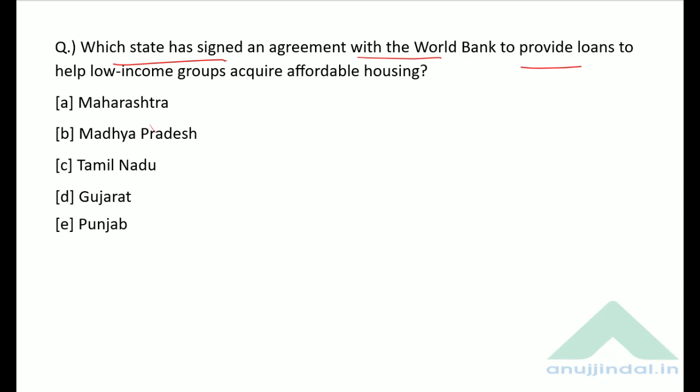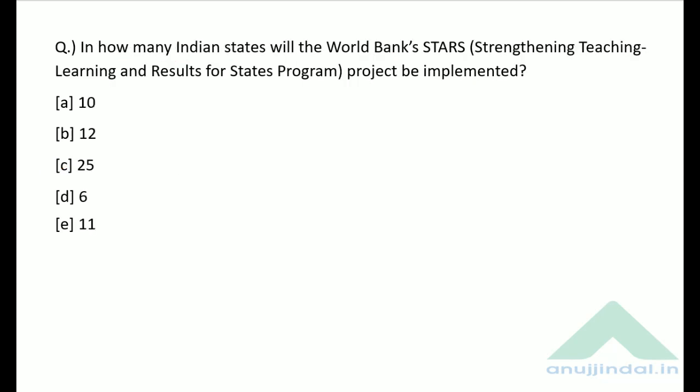Which state signed an agreement with the World Bank to provide loans to help low income groups acquire affordable housing? The correct answer is option C — Tamil Nadu.